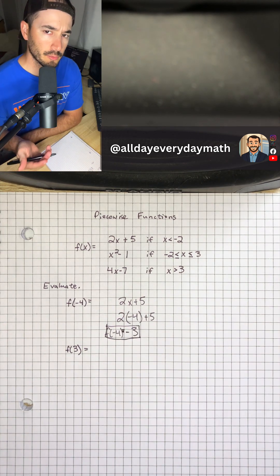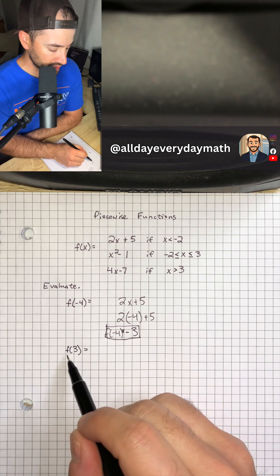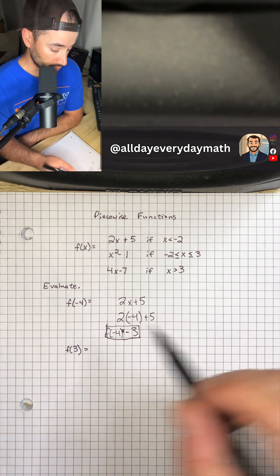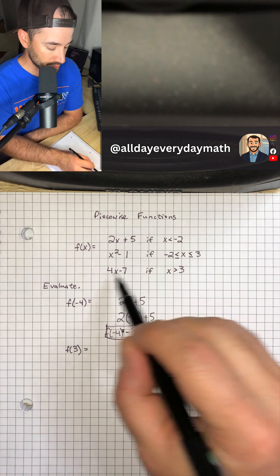So let's do one more example. Let's say we want to evaluate f of positive 3. Once again, let's go to our piecewise function.